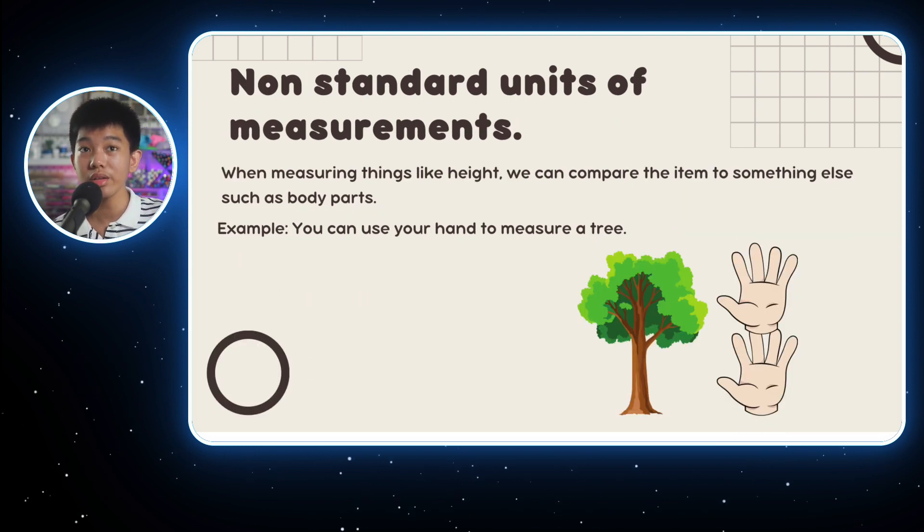First, let's start off with non-standard units of measurements, which don't involve all the standard units of measurements, and we can use anything. For example, let's say you have this tree and you want to measure it without using any standard unit of measurement. We can use things like our hand to measure them. For example, this tree is two hands long.